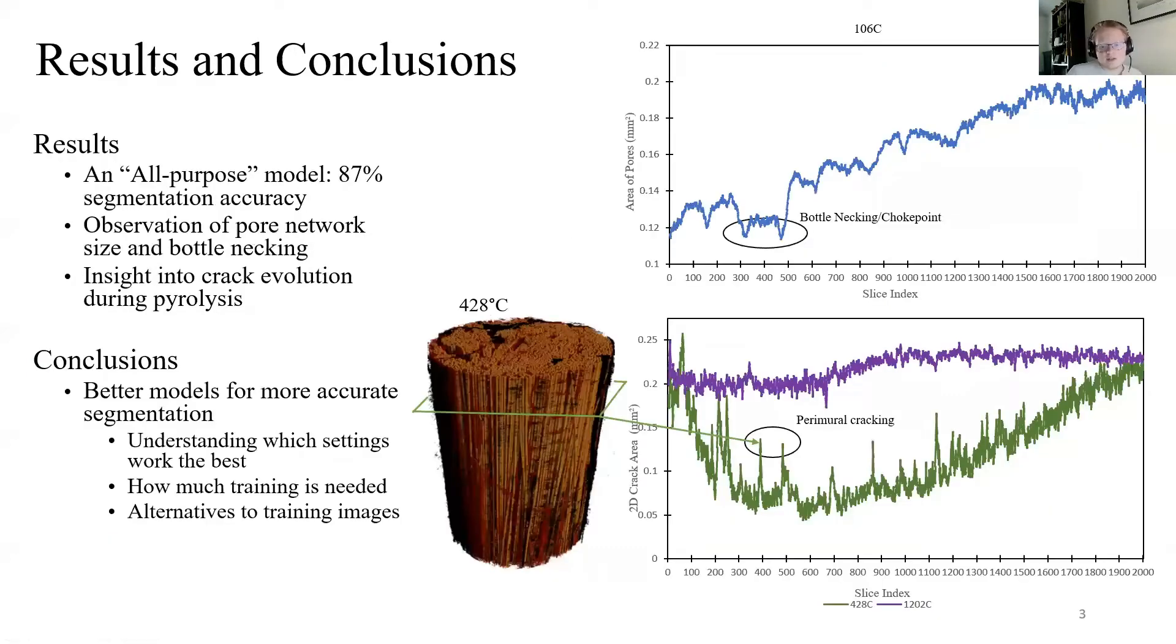When we were finally done with the training, we had an all-purpose model that achieved an overall segmentation accuracy of 87%. It provided an adequate segmentation of data sets at most temperatures. Through our model, we were able to analyze pore networks and observing that even before pyrolysis, there was a bottlenecking occurring in the sample and preventing that certain parts of the pore network were being filled with the precursor to the matrix.